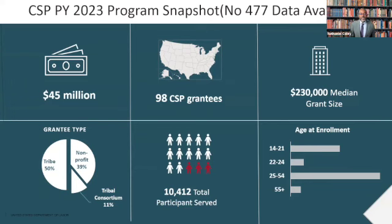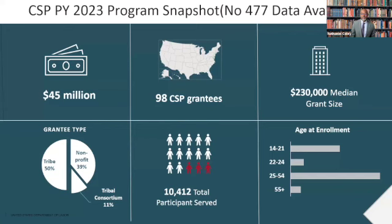The average size of our grants is about $230,000. About 50% of our grantees are tribes, 39% are nonprofits run by enrolled tribal persons, and about 11% are tribal consortia. Under our program in the last year, our grantees served about 10,000 participants. The demographic breakdown shows most participants are 25 to 54 years of age, though we also serve a lot of youth. Youth funding supports year-round activities.